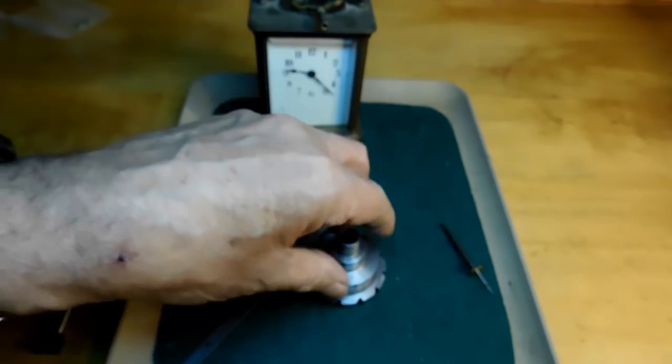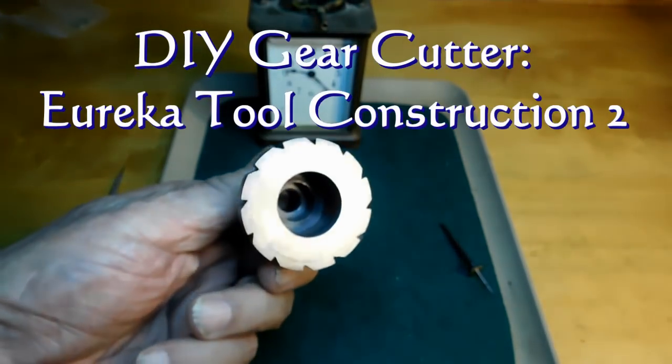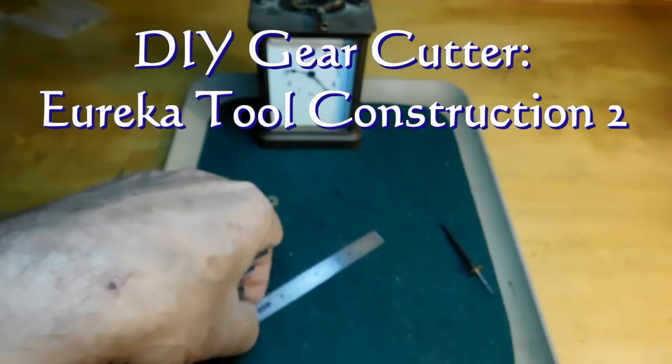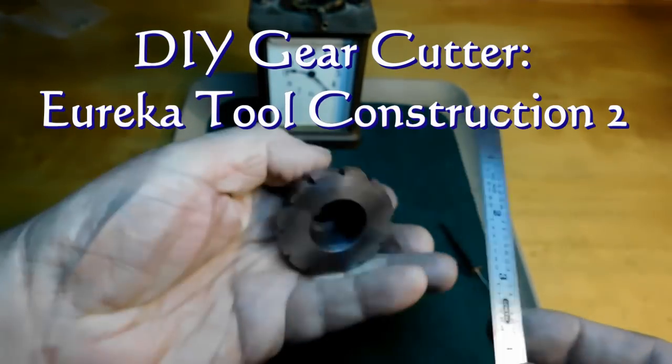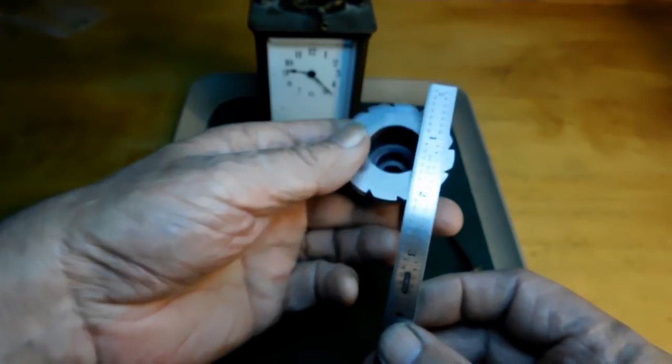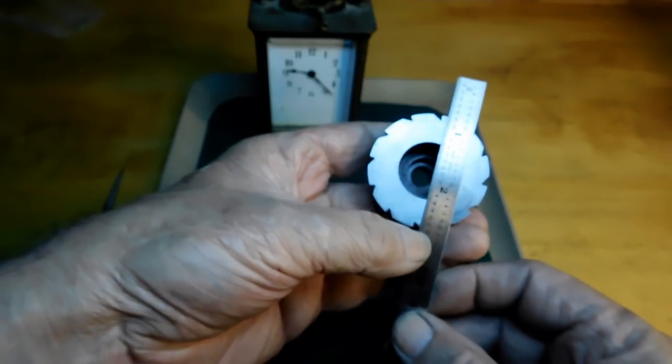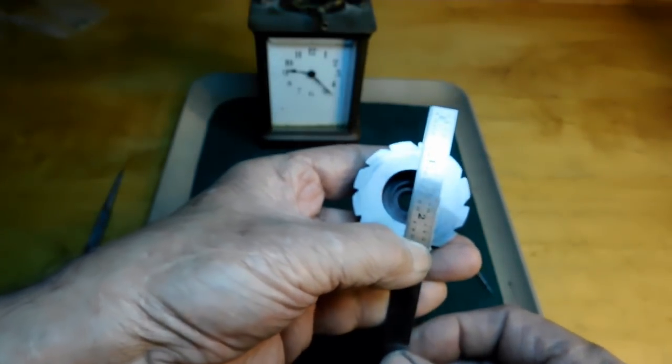This is a ratchet that you might have seen before in my video about the Eureka tool. This is the ratchet sleeve and the ratchet here is radial, it runs right through the center of the sleeve.